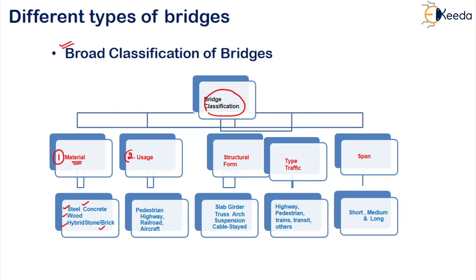The second classification is based on the usage — what are we using that bridge for? The first one is your pedestrian bridge, used by people for walking. The next one is your highway bridge, railway bridge, or sometimes near airports, for aircraft also we might use certain bridges. Based on that usage classification, these are the four kinds.